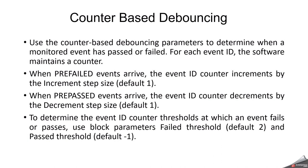In counter-based debouncing, for each event ID the software maintains a counter. The counting value is defined by the developer. When pre-filed events arrive, the increment step size default is 1; for pre-passed, the decrement step size is 1. The failed threshold defaults to 2 and the passed threshold can default to minus 1, but these are configurable. If you want a jump, you can configure accordingly. That is what counter-based debouncing is.